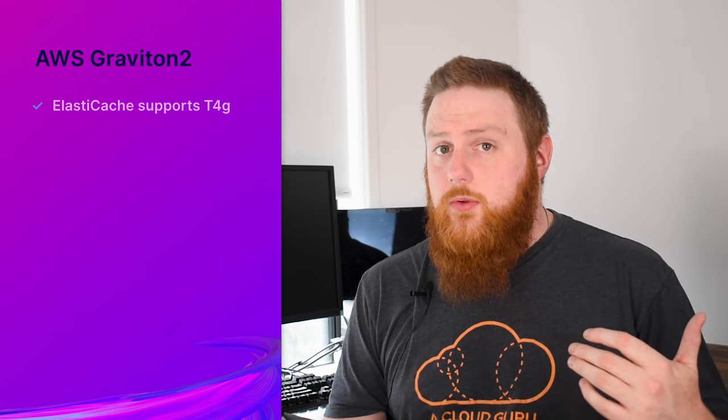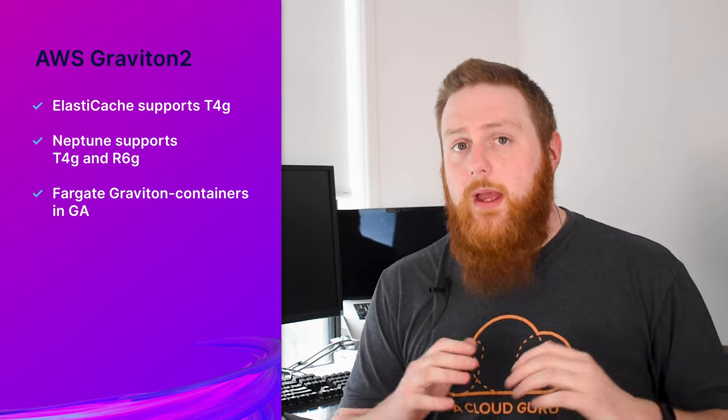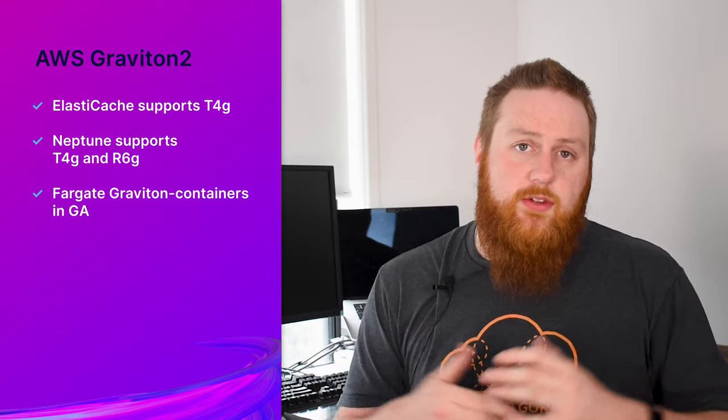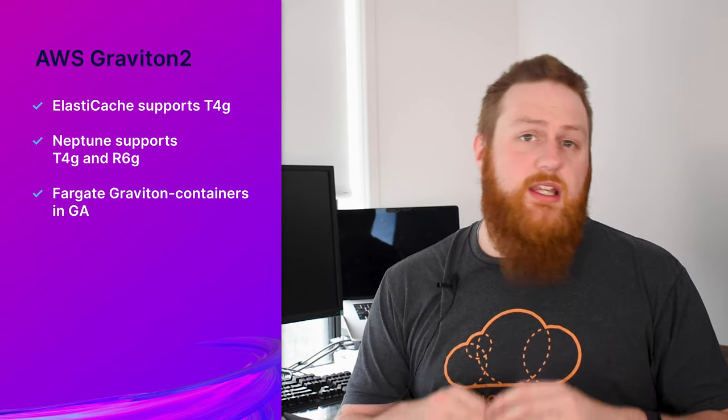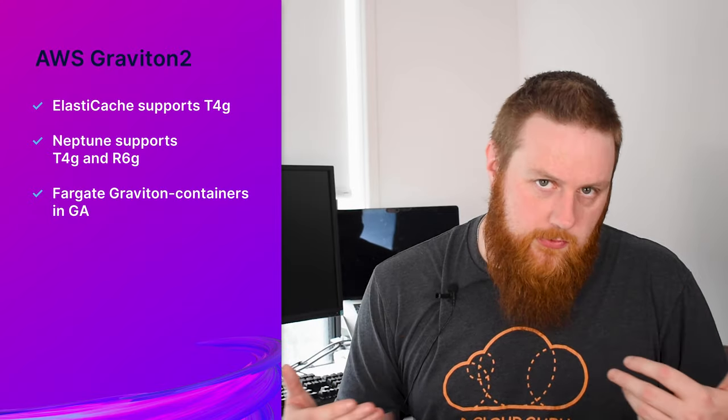With their investment in Graviton 2, AWS have announced support for a bunch of new services to leverage these CPUs specifically designed for workloads with the needs of the public cloud. ElastiCache can now run on burstable T4G instances, while Neptune has included support both for the T4Gs and also the latest generation R6G instances. But the most interesting one has to be that Fargate now supports containers powered by Graviton 2. Fargate gives us the ability to run containers without managing the underlying servers — essentially a serverless container platform — so much like Lambda, you only need to pay for the time and resources you actually consume.